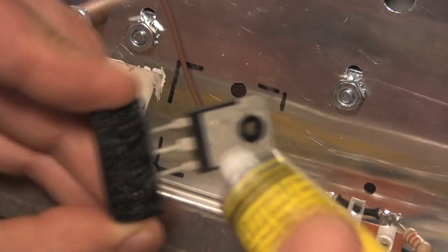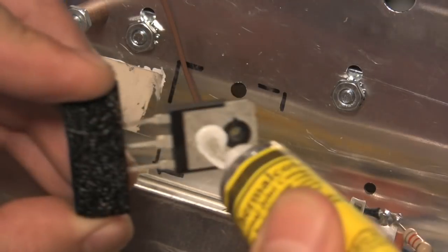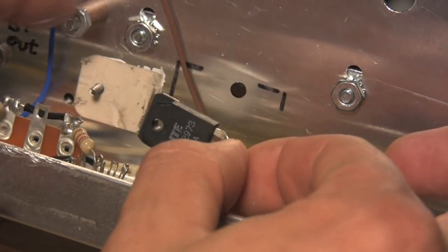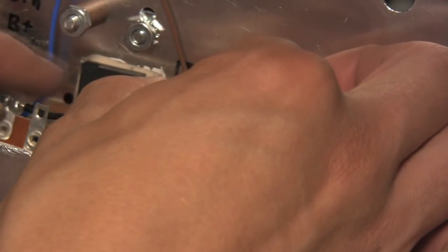I'll apply compound now to the metallic side of the MOSFET. Then, I'll place it on top of the Mica insulator and lightly press it in place.